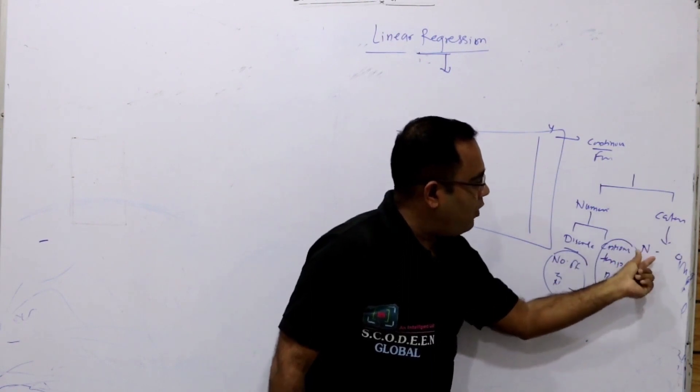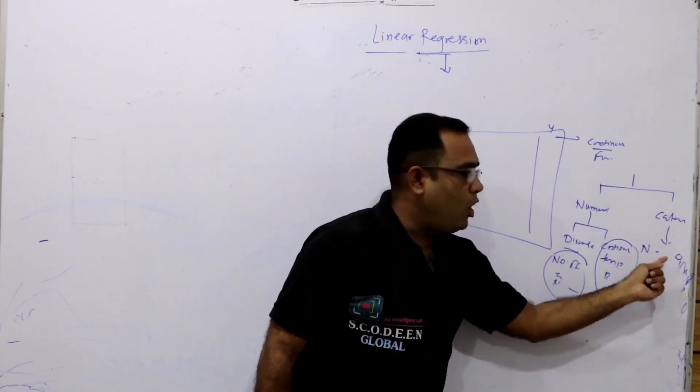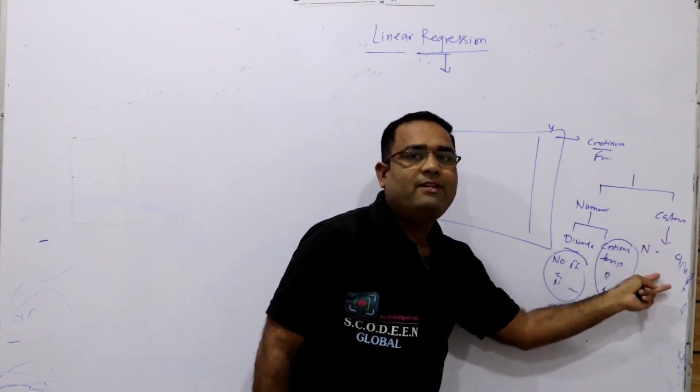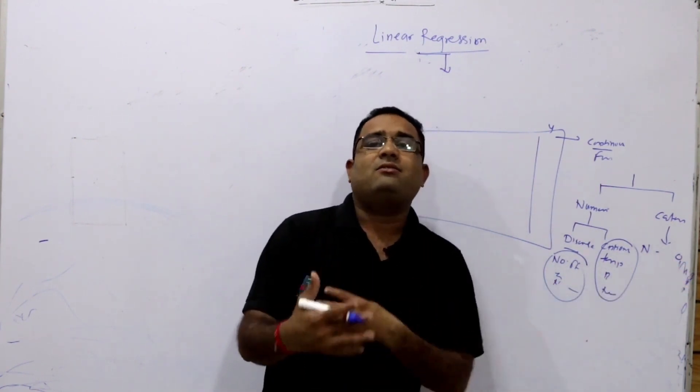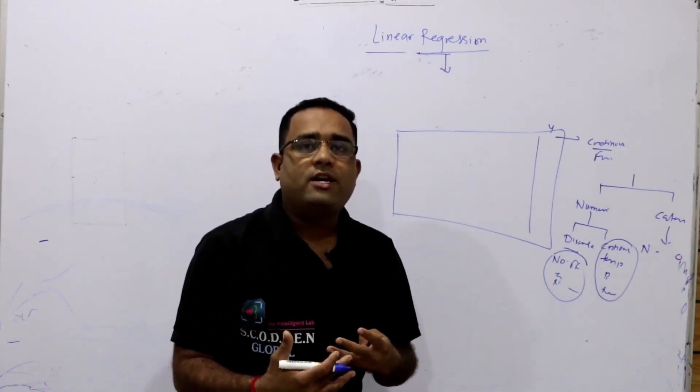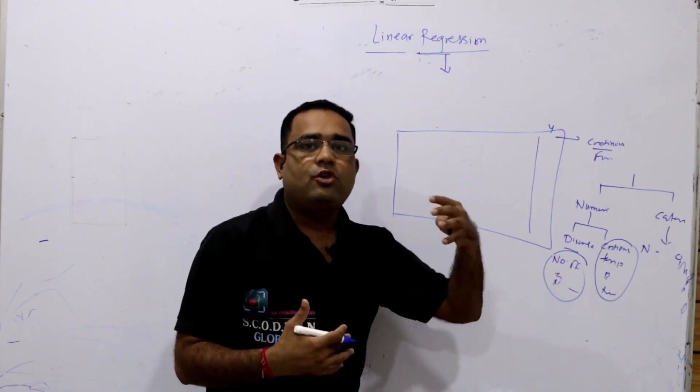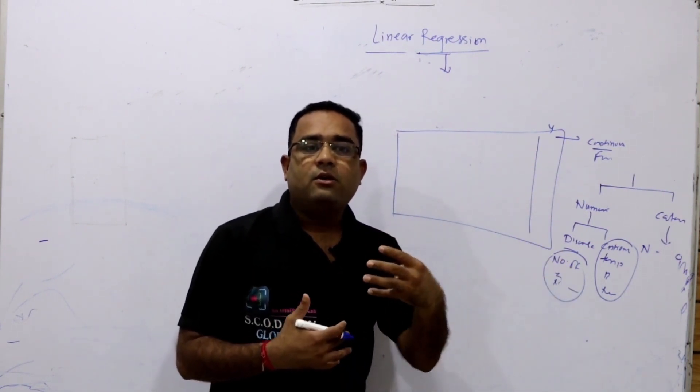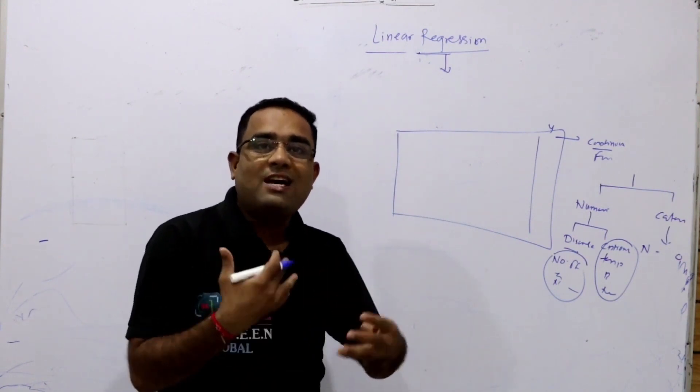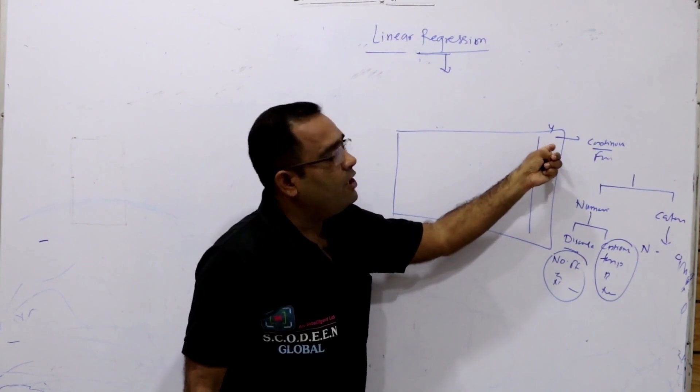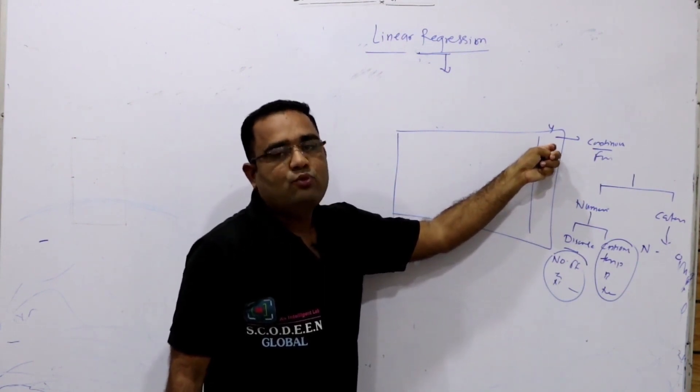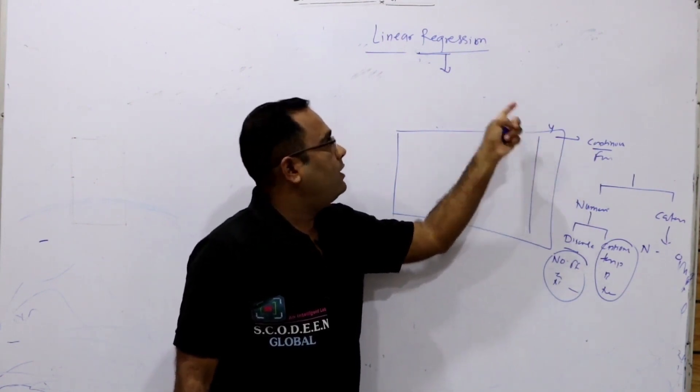In categoricals, we have nominal and ordinal. Nominal means existing names like colors. Ordinal means they have some orders. Suppose they have graduation, we can say grades. So, these are kind of orders. So, when we have this continuous feature in target, we can go for the regression algorithm.